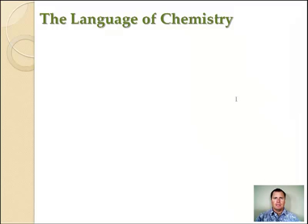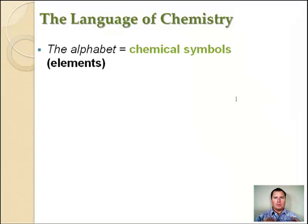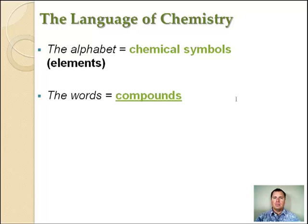Let's talk about the language of chemistry. Like all language, chemistry starts with the alphabet. That's our chemical symbols, our elements. Remember, you're going to need to learn 62 of those for this class. You're going to have to memorize the name and the symbol. What do we do once we have the letters? Well, we put them together to form words. And then the words in chemistry are what we call compounds.